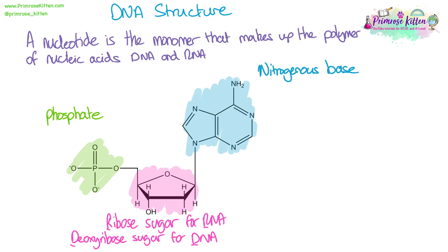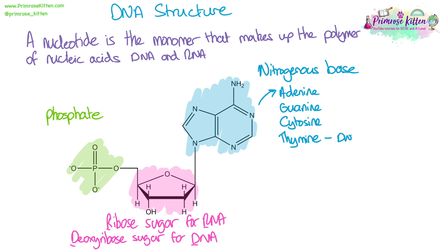Each nucleotide will have a different nitrogenous base. This example here is adenine, but there is also guanine, cytosine, and thymine. Thymine is only found in DNA. Uracil is another example of a base and this is found in RNA only.